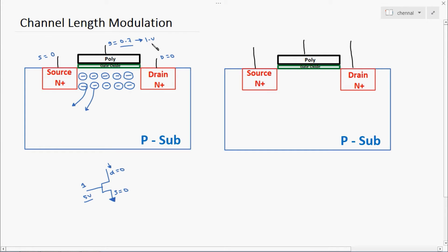Now I have applied 0.7 or 1 volt — the channel is very strong. Consider I have applied 1 volt. Now the drain voltage is 0 and source voltage is 0. Suppose due to some problem — leakage current, ground bounce, some noise signal, or some unfortunate situation — the source voltage is increased by positive 0.3 volt.